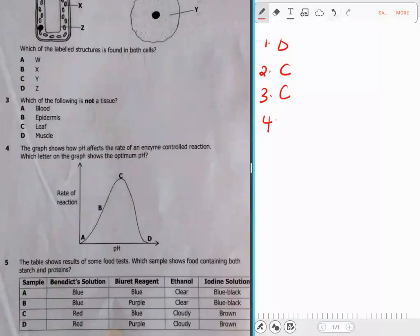The graph shows how pH affects the rate of an enzyme-controlled reaction. Which letter on the graph shows the optimum pH? Optimum pH is a pH at which enzymes work the best, and that is C.